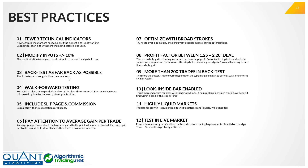Pay attention to average gain per trade. Of all the metrics in the backtest, this is one of the top ones in my opinion, because it gives you an idea of how much margin for error there is — particularly on the fills. The higher the average gain per trade, the more margin you have for slippage. That's why we trade the S&P and 10-year only, because they can handle the volume we do.